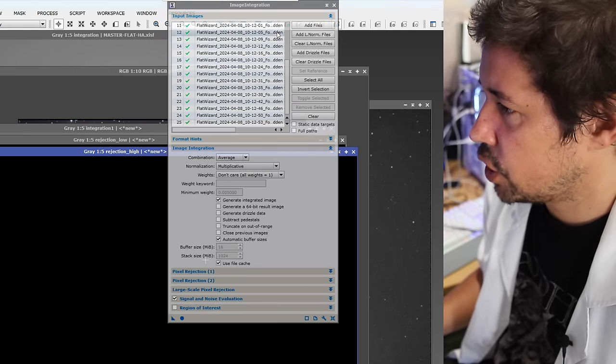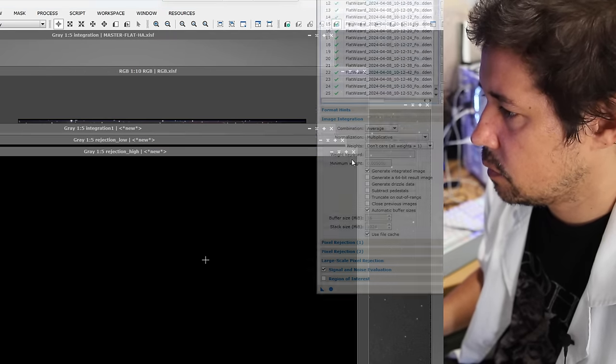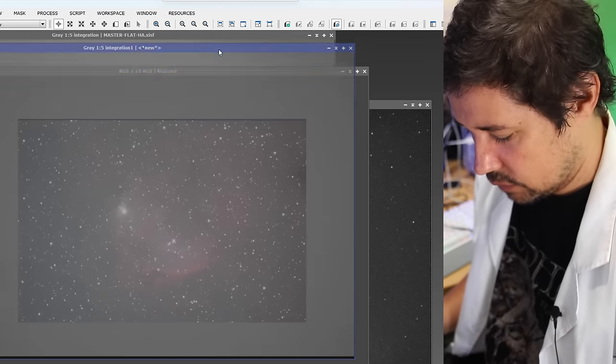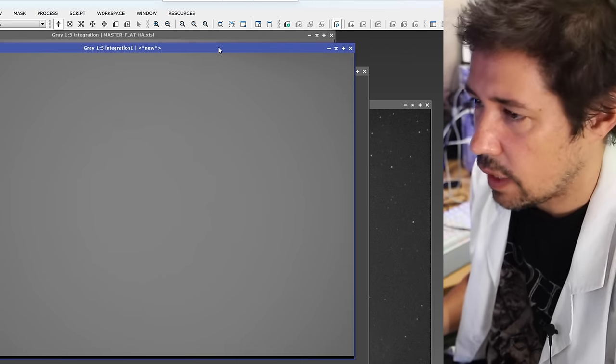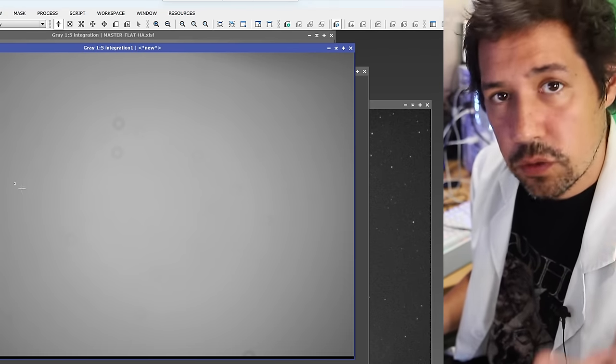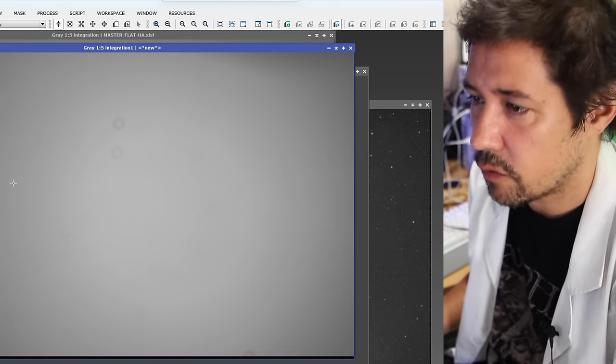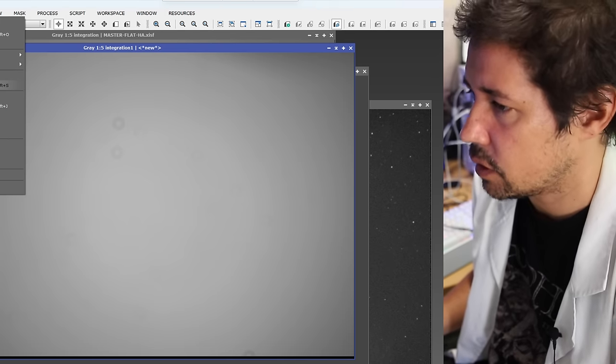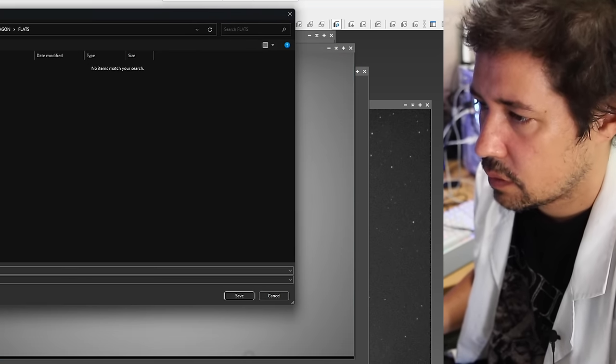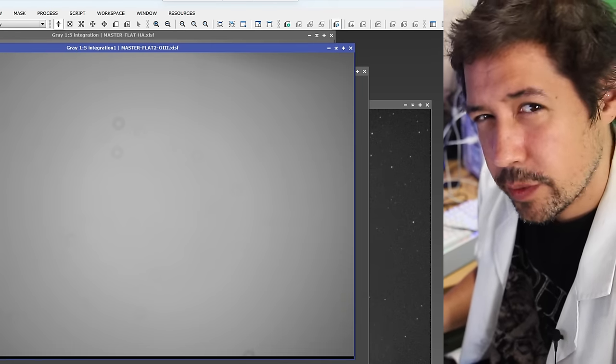Okay, it gives us some rejection maps here, which we can close and just stretch the integration it leaves us with, with control A, and then you can see the dust motes there. You can see the vignetting. This is all the stuff it's going to remove. Great. I'm going to save this off as a master flat for oxygen, and I'm going to save that in the project itself. Keep it as 32-bit. Now, how do we know if this works?